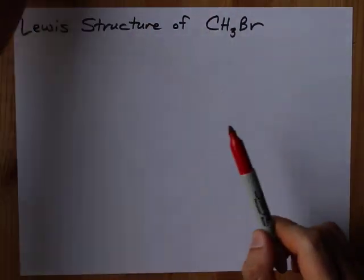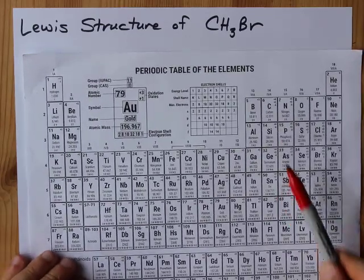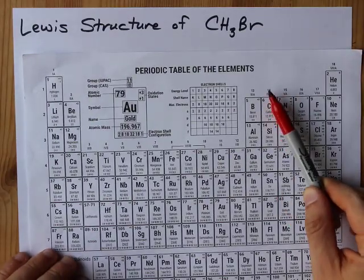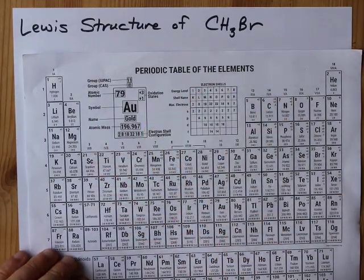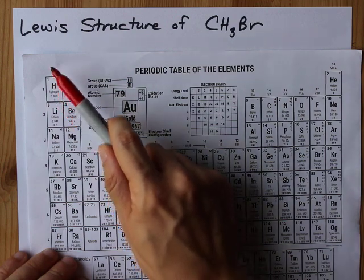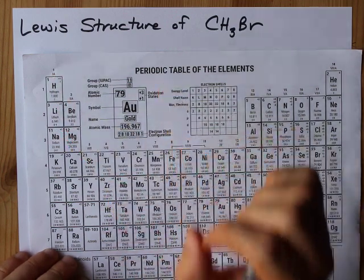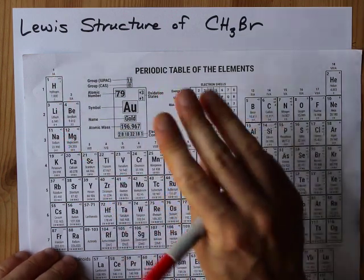We need to know how many valence electrons these things bring. Carbon, group 14, brings 4 valence electrons. Hydrogen, first column, brings 1 valence electron each. It's going to be 3 total.